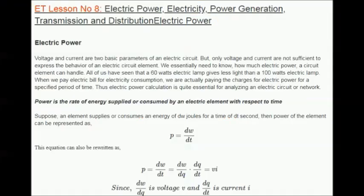Let's start today's session which is about electric power, electricity, power generation, transmission and distribution. Voltage and current are two basic parameters of an electric circuit, but only voltage and current are not sufficient to express the behavior of an electric circuit element. We essentially need to know how much electric power a circuit element can handle. All of us have seen that a 60-watt electric lamp gives less light than a 100-watt electric lamp. When we pay an electric bill for electricity consumption, we are actually paying charges for electric power for a specified period of time. Thus electric power calculation is quite essential for analyzing an electric circuit or network.